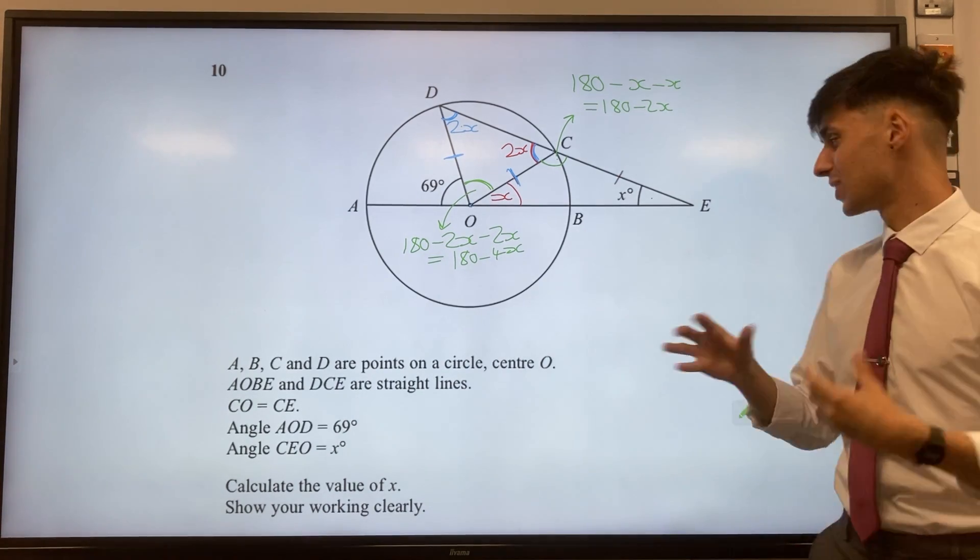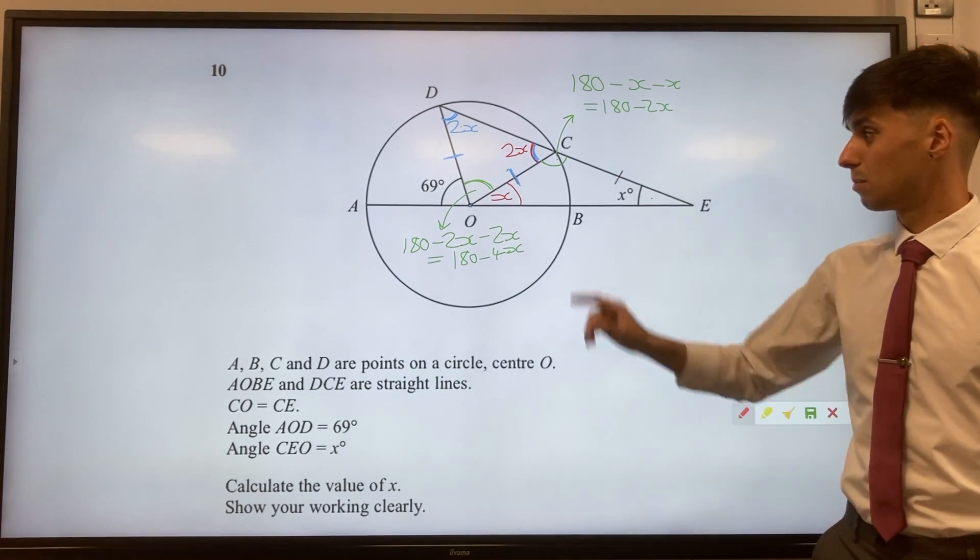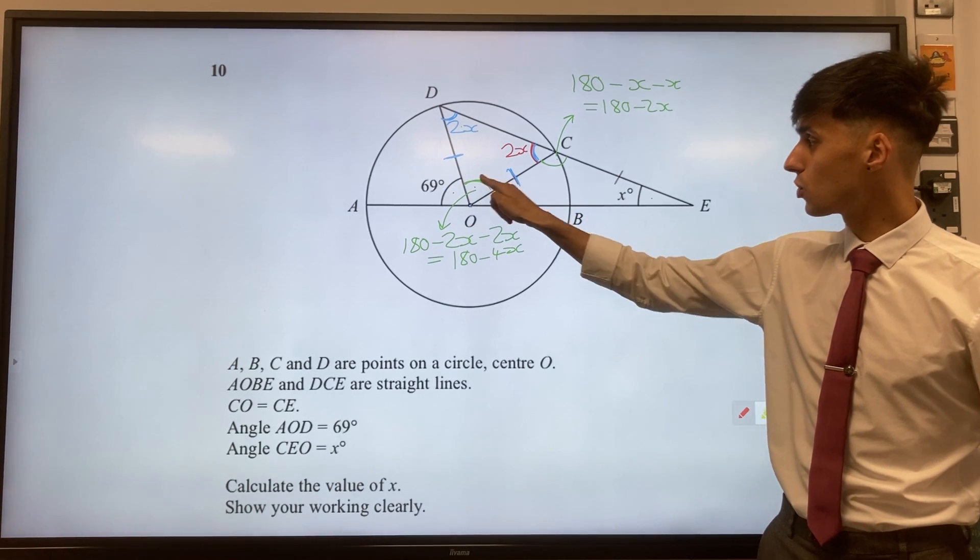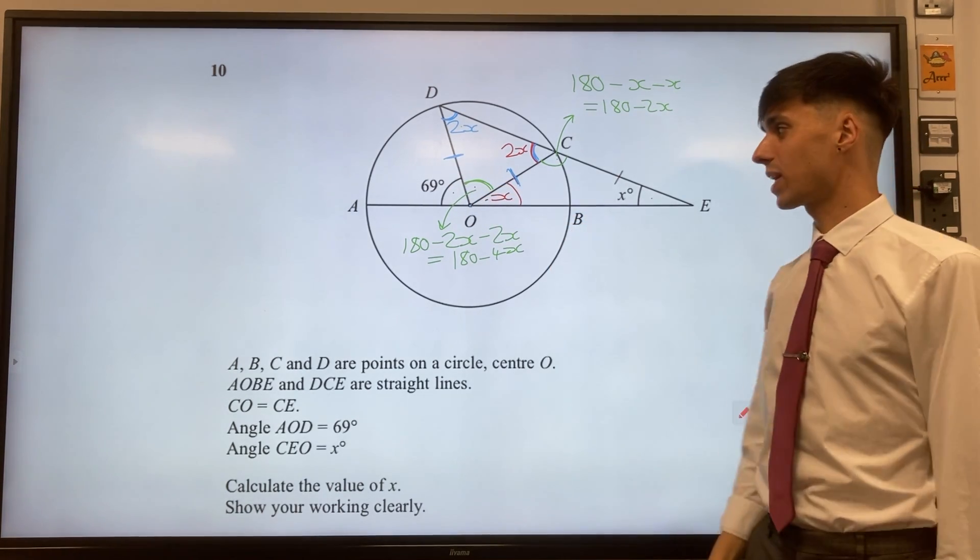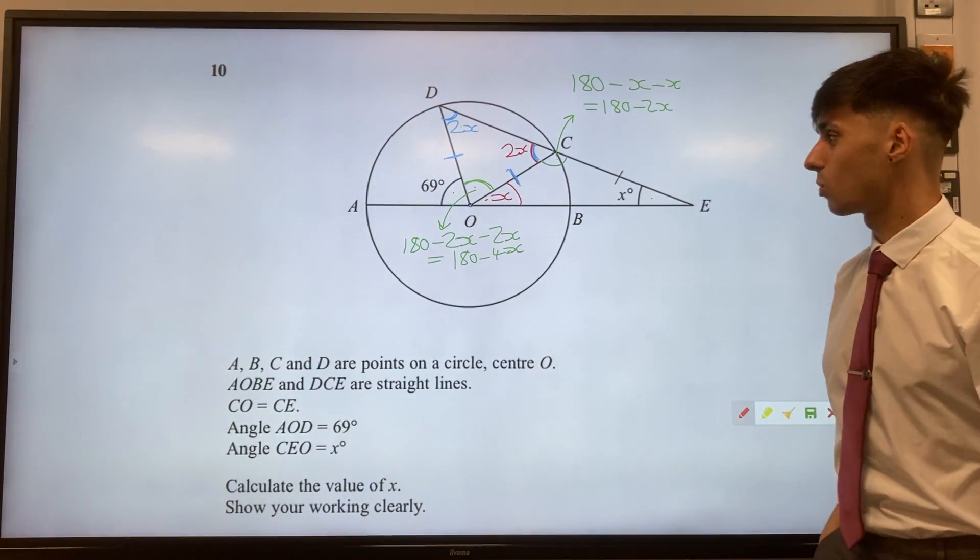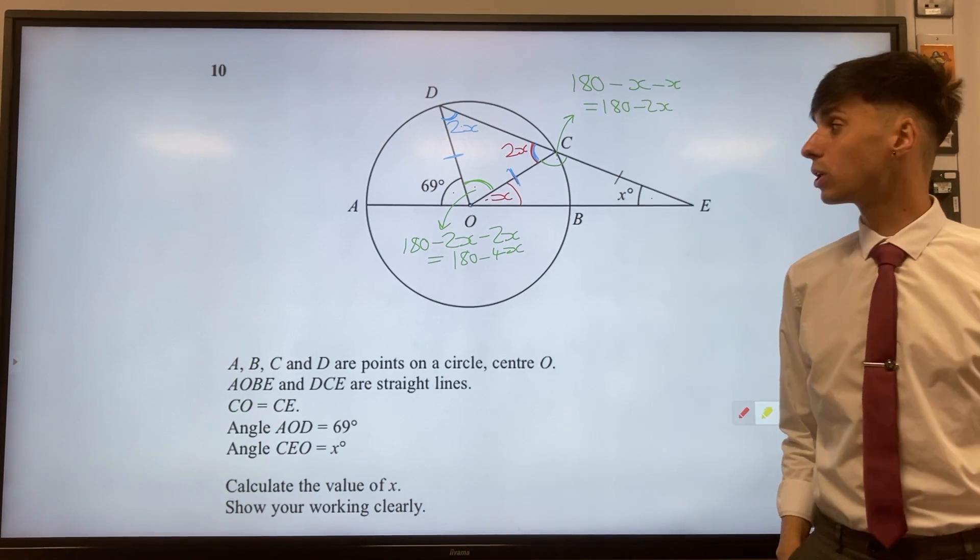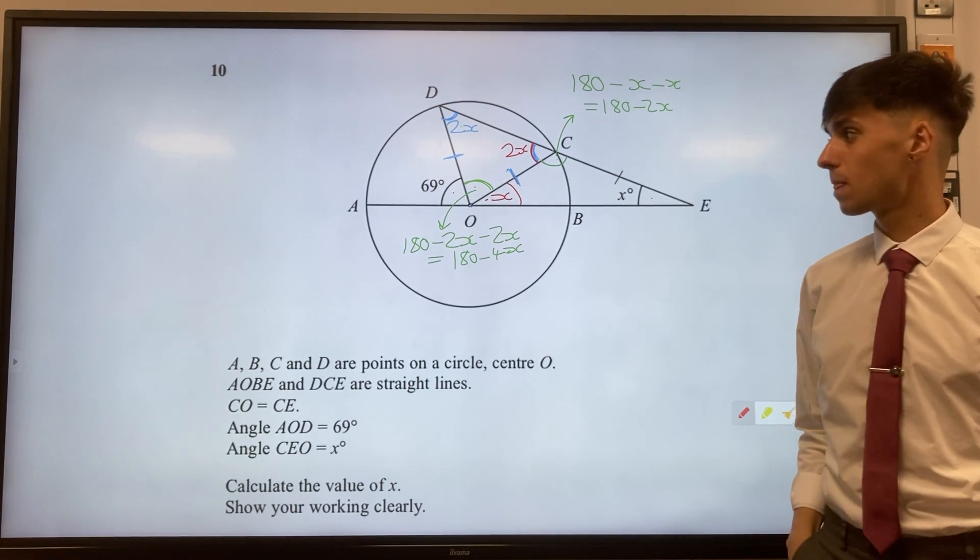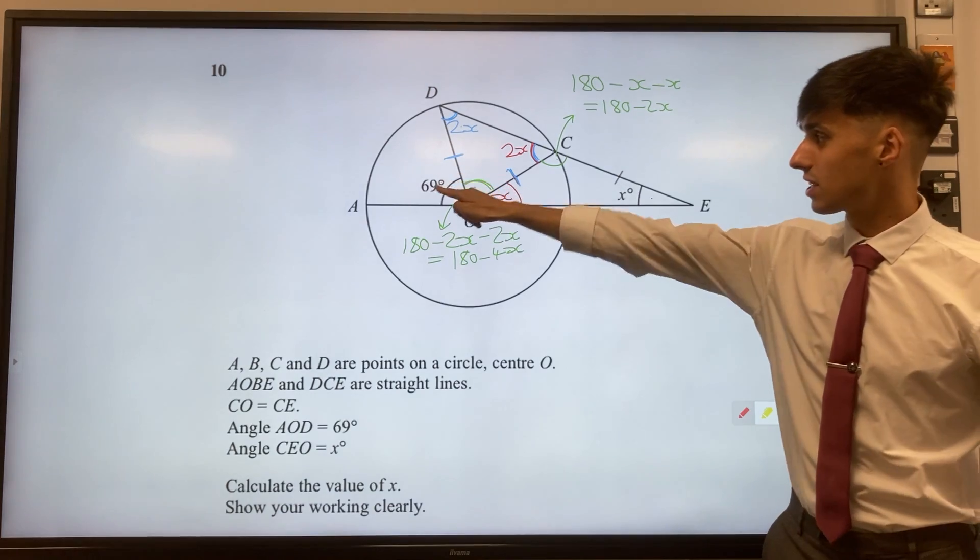We're almost there to using the numbers now. Because nicely for ourselves, we have got 1, 2, 3 angles on a straight line. They must add to 180. And we can now form an equation to help us.